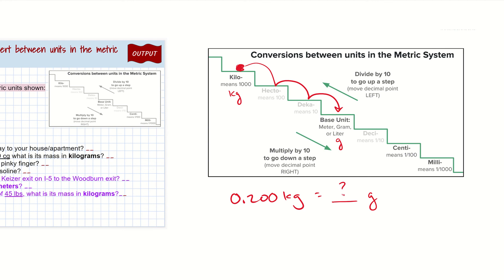Since we started at the top step and we move down three steps, every time we go down a step you multiply by 10. Multiplying by 10 is just moving that decimal point to the right to make the number bigger. So I move my decimal place to the right three times — that multiplies by a thousand — and I get 200 grams. So 200 grams is equal to 0.2 kilograms; they're the same amount, just using different metric units.